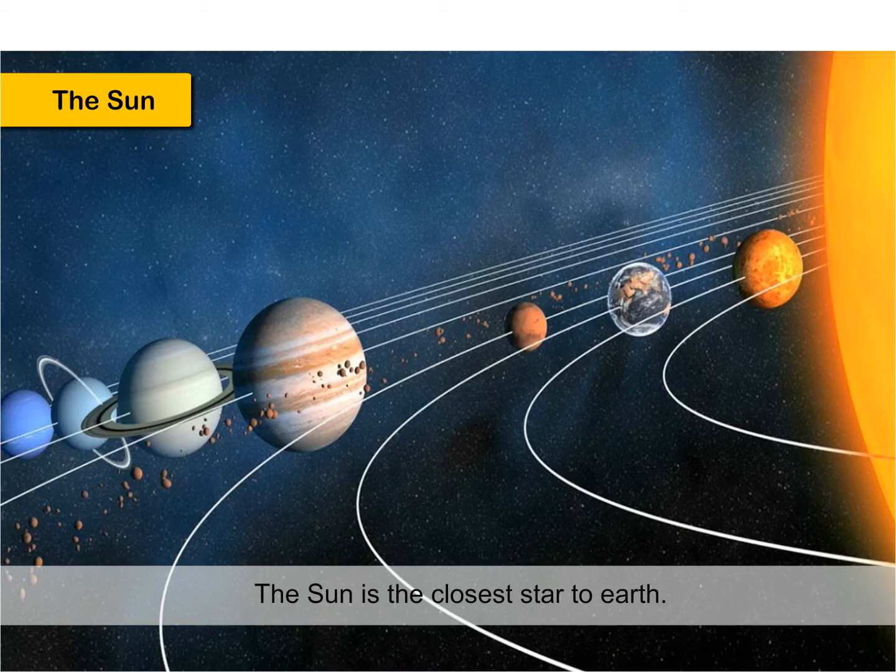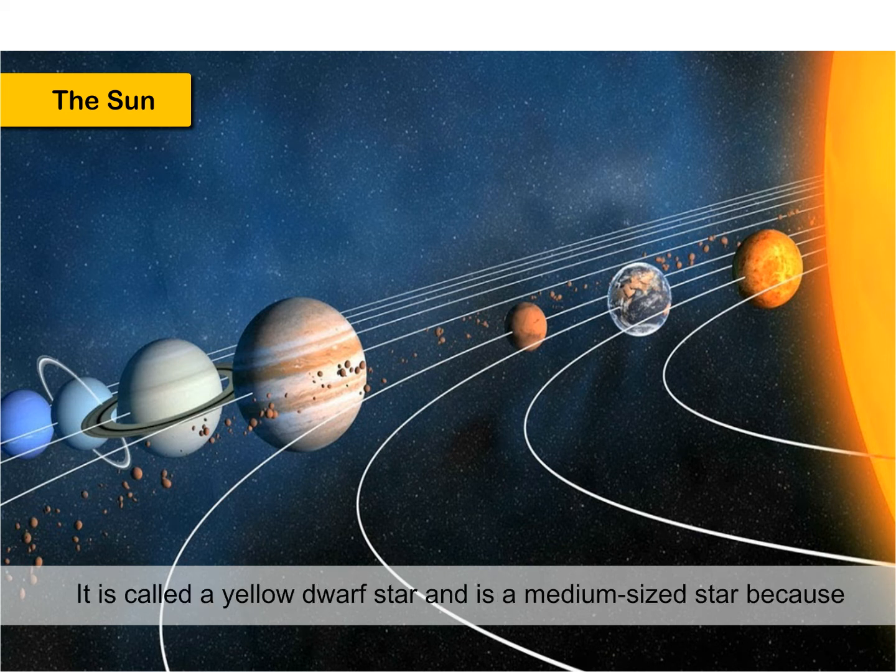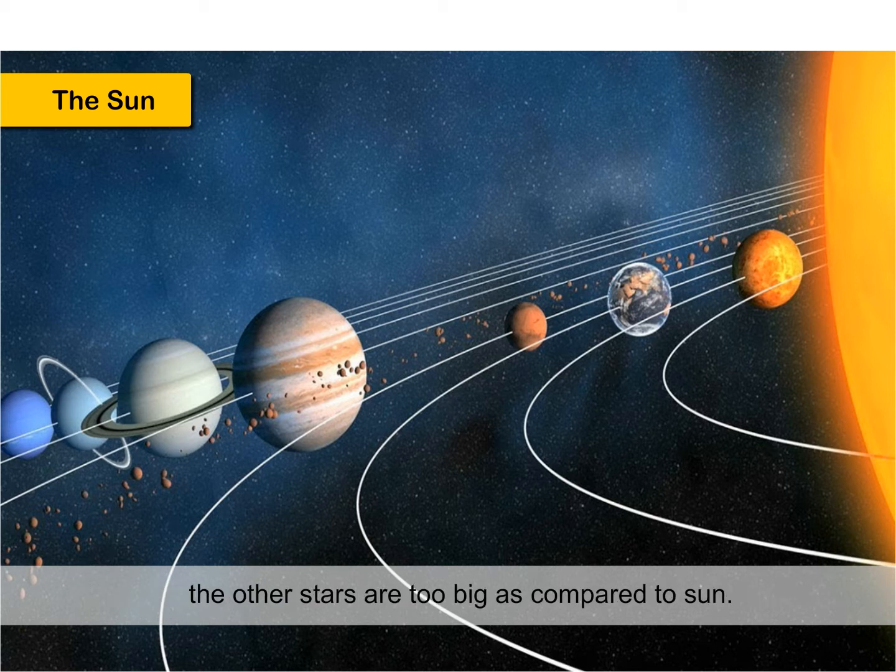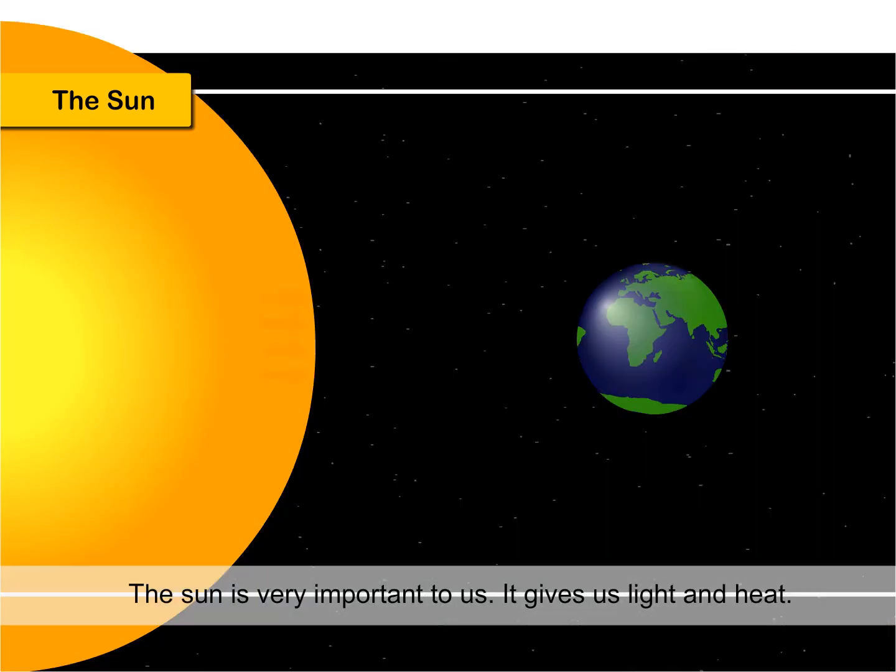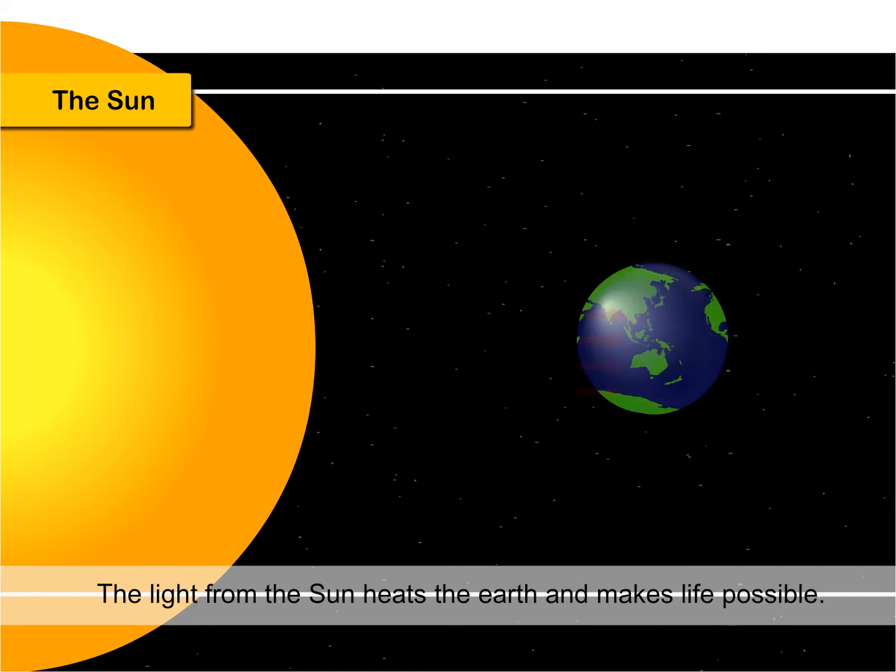The sun is the closest star to Earth. It is called a yellow dwarf star and is a medium-sized star because the other stars are too big as compared to sun. The sun is very important to us. It gives us light and heat. The light from the sun heats the Earth and makes life possible.